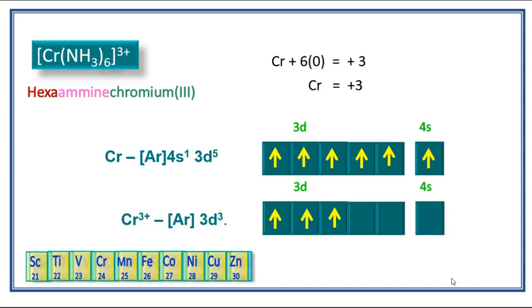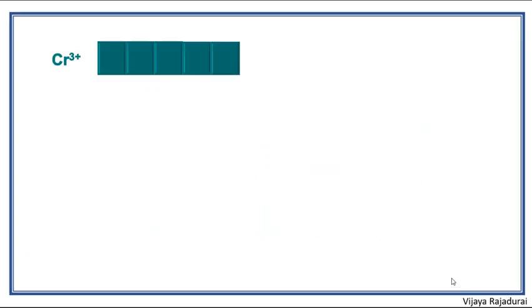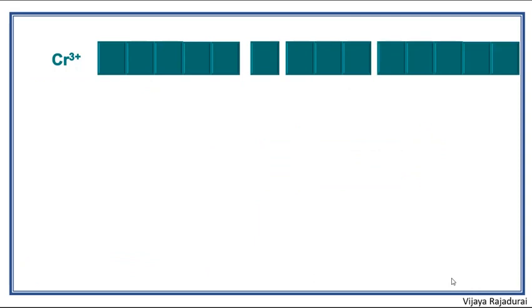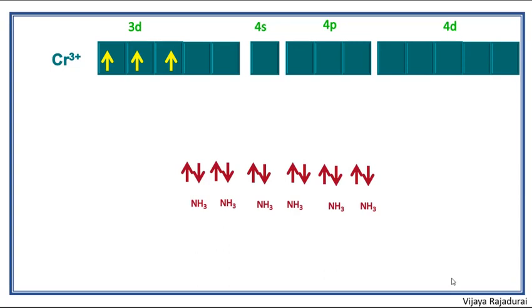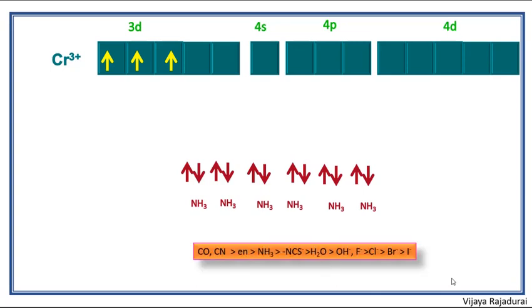Next step we have to check the characteristic of ligands, whether ligands are strong ligand or weak ligand. Here this complex contains six amine ligands. These amine ligands are strong ligands, so they can pair up the electrons in 3d orbital.